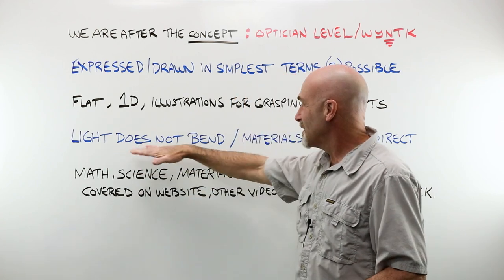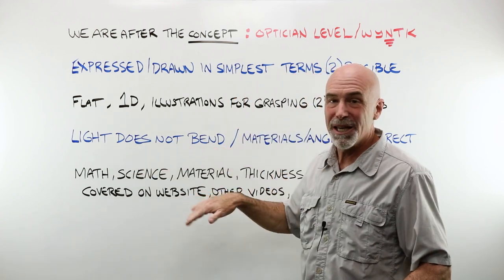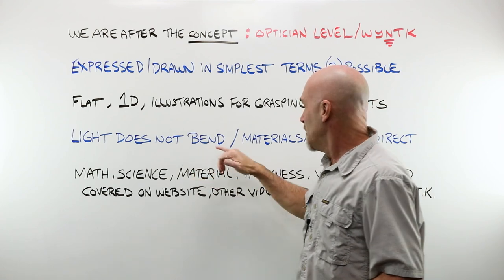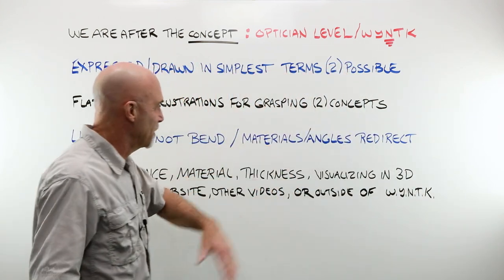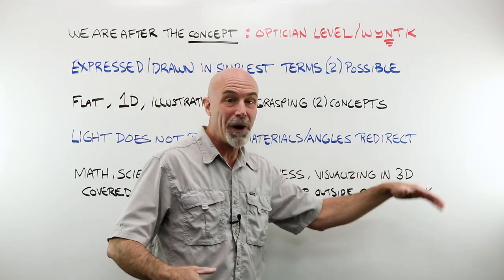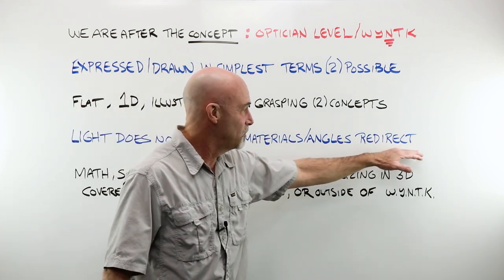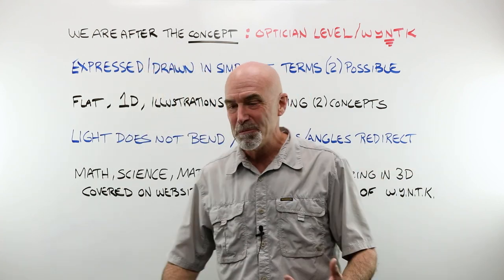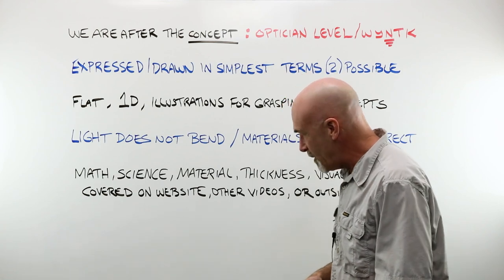I will be up front and say that light does not bend. We tend to say that word a lot, when in fact it doesn't. What happens is that materials and angles redirect the rays of light. They don't bend them, they redirect them, but I may slip up and use that word.